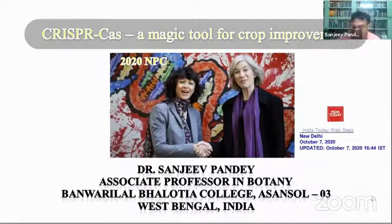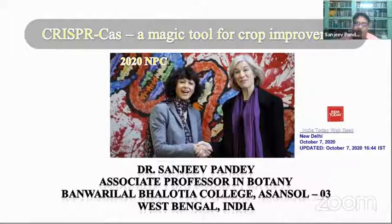I'm going to start my lecture titled 'CRISPR-Cas: a magic tool for crop improvement.' This was a very burning topic, and it won the 2020 Nobel Prize in Chemistry to these two young women scientists, Emmanuel Charpentier and Jennifer Doudna.